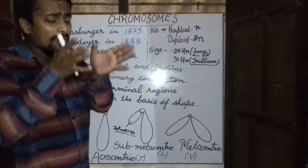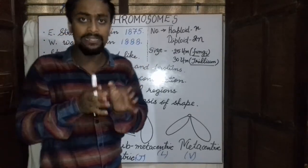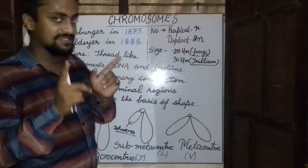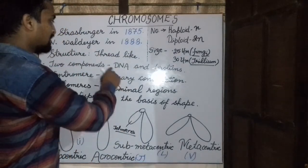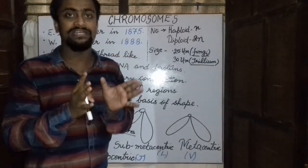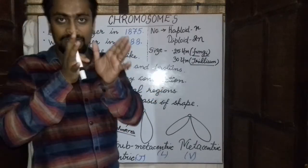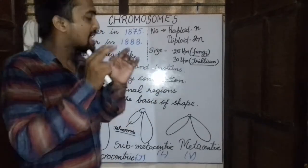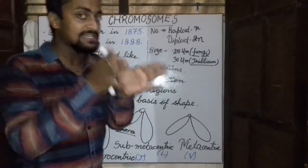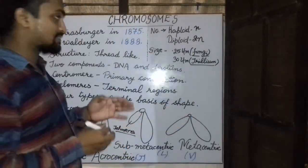Now what is the chemical structure of these chromosomes? The chromosomes consist of mainly two components. The first is DNA — deoxyribonucleic acid — which is the genetic material in most multicellular plants and animals. The second is proteins, mainly the histone proteins and the acidic proteins.